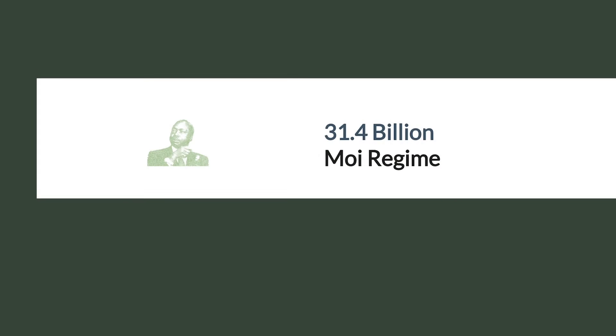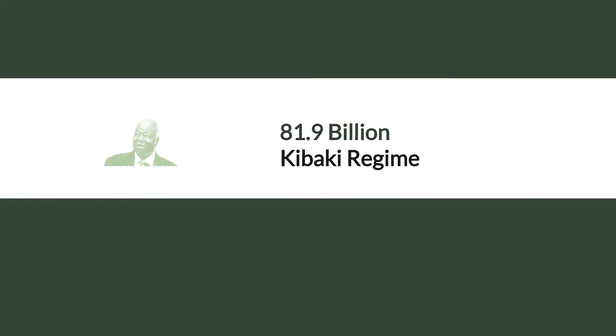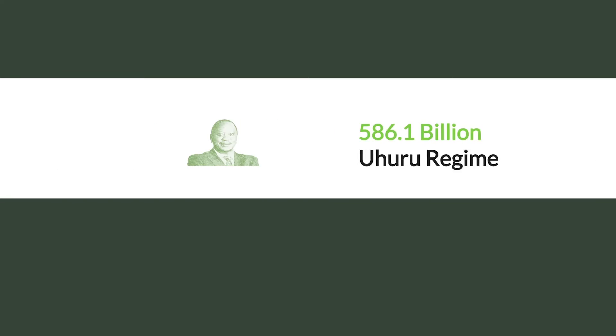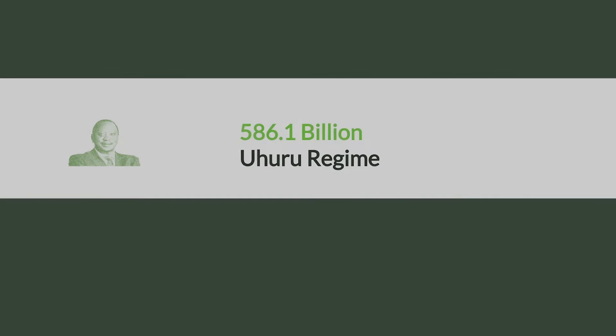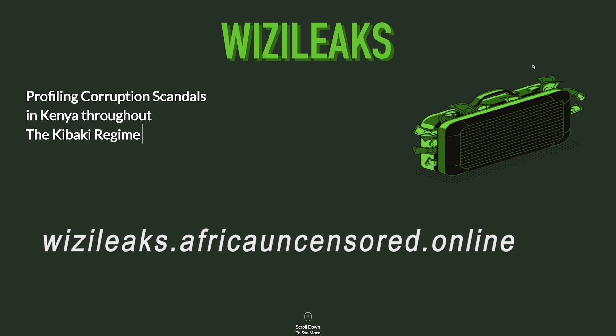On WizzyLeaks, you will find era profiles in terms of corruption, starting with the Moi regime, going forward to the Kibaki regime, into the Uhuru Kenyatta regime, as well as what's going to be happening going forward, unfortunately. If you want to interact with WizzyLeaks, go to wizzyleaks.africauncensored.online and begin to understand the history of corruption in our country in order for us to chart a new path forward for Kenya.